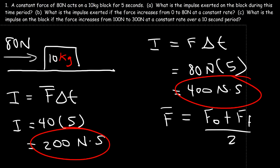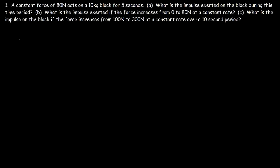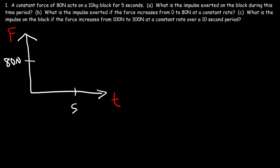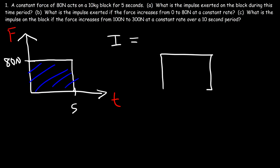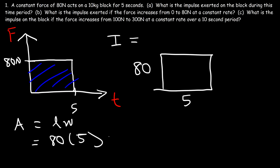Let's confirm these answers with a graph, starting with Part A. We put force on the y-axis and time on the x-axis. We have a constant force of 80 newtons acting for 5 seconds, so we get a straight horizontal line. The impulse on a force-time graph is the area under the curve, and here we need the area of a rectangle: length 80 times width 5 equals 400 newton-seconds.